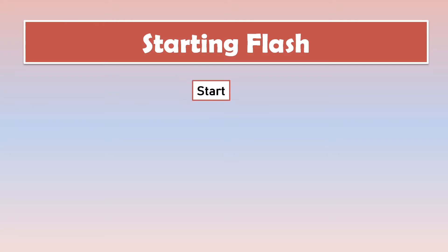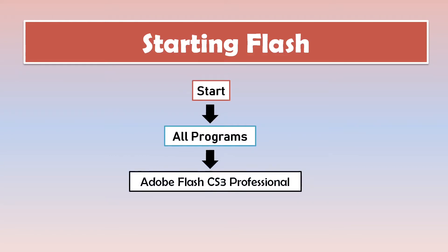Now let's begin with starting Flash on our screen. We will launch Flash on our computer. The steps are very easy. First of all, we will click on the start button, then we will click on all programs, and finally we will choose Adobe Flash CS3 Professional. So the name of the software is Flash and the version we will be using is CS3.